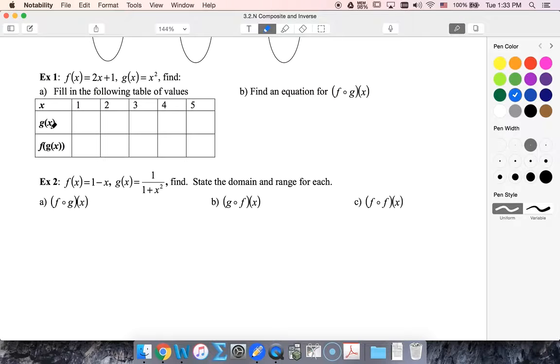So 1 squared is 1, and then I take that output value of 1 and put it into my f. So 2 times 1 plus 1 is of course 3. So I start by taking x and put it inside of g, then I get 4, and then f of 4 is going to be 9. 3 squared is 9, 2 times 9 is 18, plus 1 is 19.